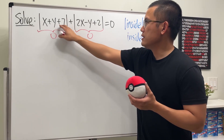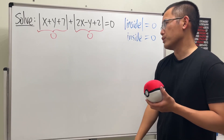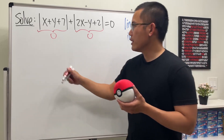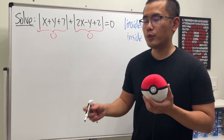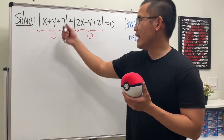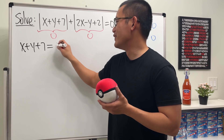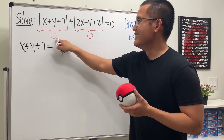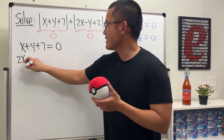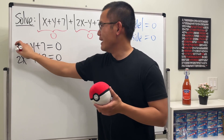If this plus that equaled something like two, I wouldn't know how to do that — it would be crazy. But anyway, that's the key. So we actually end up with a system of equations: x plus y plus seven equals zero, and two x minus y plus two equals zero.